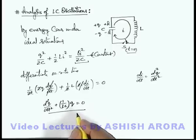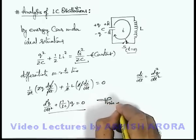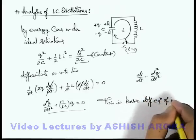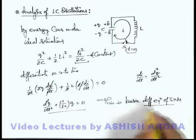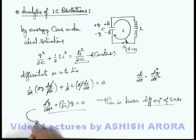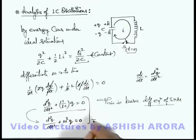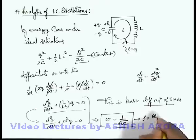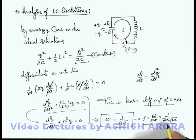If you carefully analyze this equation, you can see this is the basic differential equation of simple harmonic motion — SHM of charge q. Comparing it with d²q/dt² + ω²q = 0, we get ω² = 1/LC, so omega equals 1 by root LC. The frequency of oscillation is ω/2π = 1/(2π√LC), and the time period is T = 2π√LC.